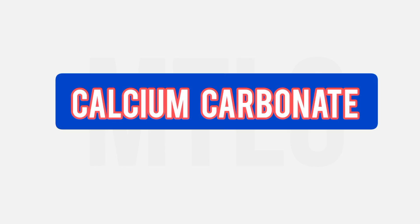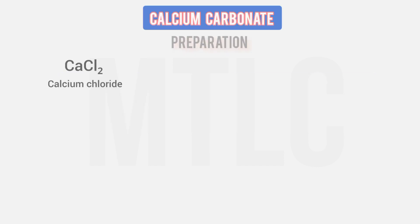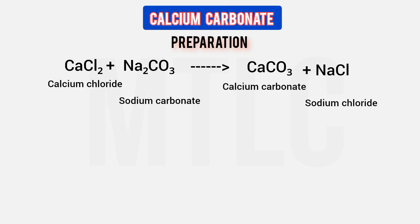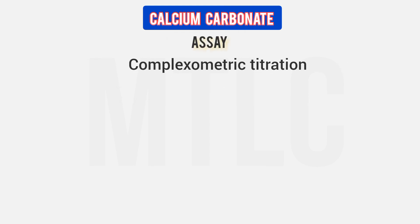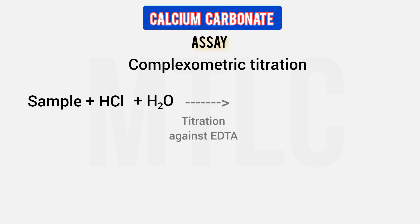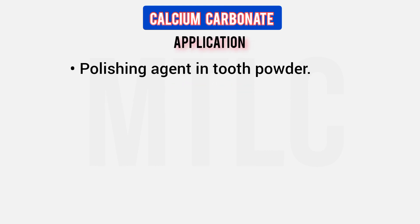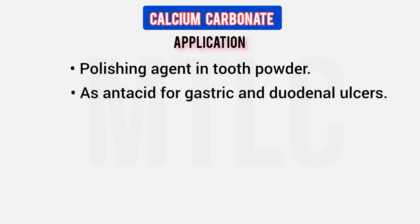Next is calcium carbonate (CaCO3). It is prepared from calcium chloride and sodium carbonate, giving calcium carbonate plus sodium chloride. For assay: complexometric titration — dissolve in hydrochloric acid, dilute with water, titrate against EDTA using Calcon mixture indicator. Endpoint: pink color to blue color. Uses: polishing agent in tooth powder, and in gastric and duodenal ulcer cases.